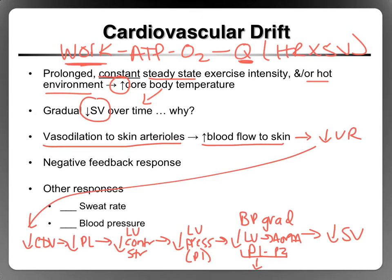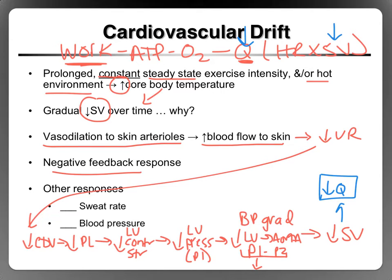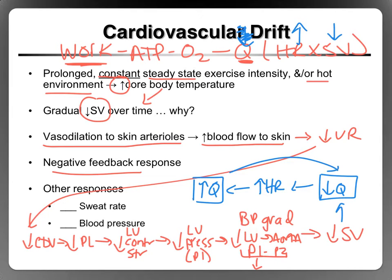So stroke volume is being reduced. This triggers a negative feedback response, because if stroke volume drops, cardiac output is going to drop. That's a problem because you're at a constant workload — if cardiac output drops, the oxygen and ATP supply will drop. So the body reacts quickly: the response to this reduction in stroke volume is an increase in heart rate. Because if heart rate increases, that can make up the difference for the reduction in cardiac output, and cardiac output can come back up to where it needed to be. And we have our negative feedback.